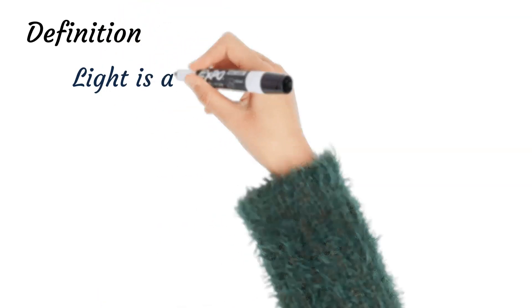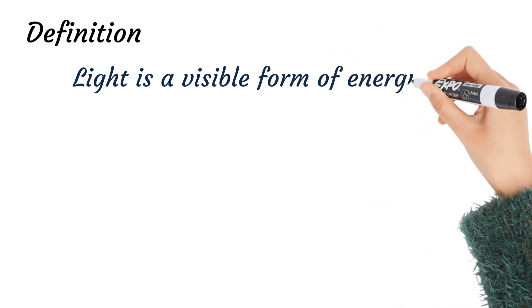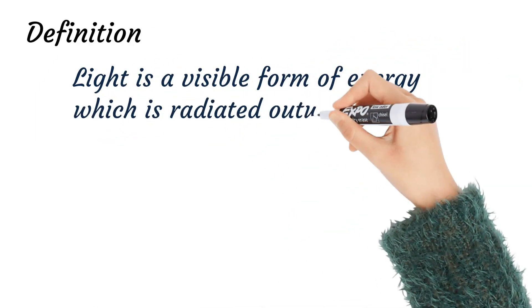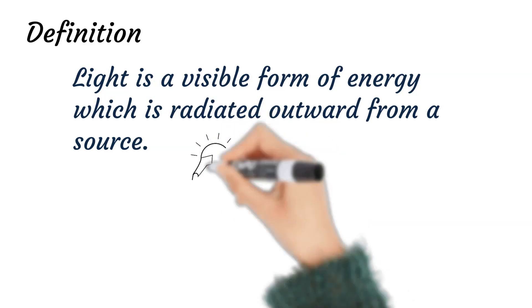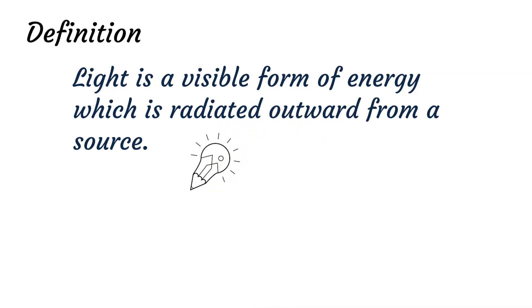Definition: light is a visible form of energy which is radiated outward from a source. It comes out from a source and covers a distance. It has different colors - red, blue, as the case may be.